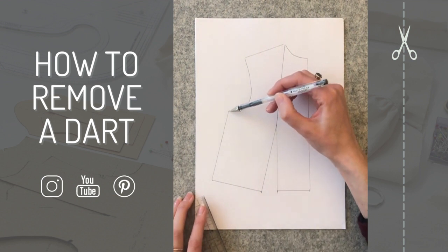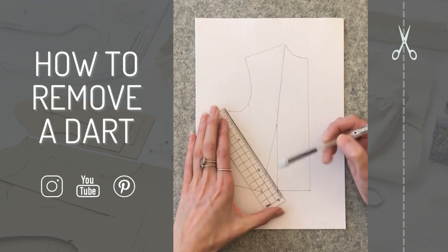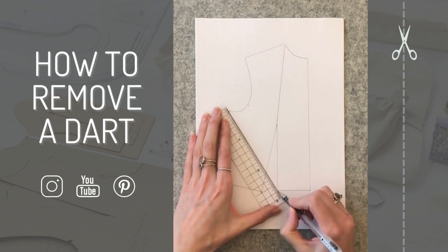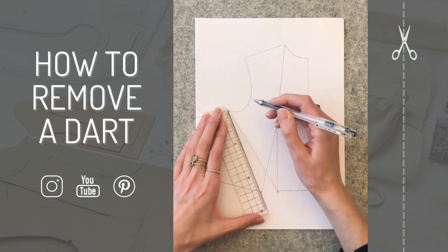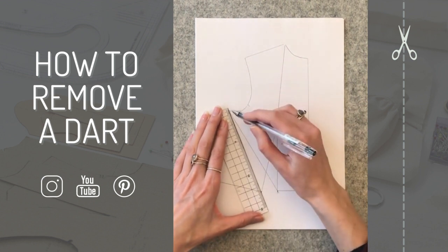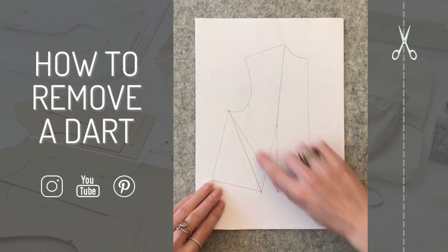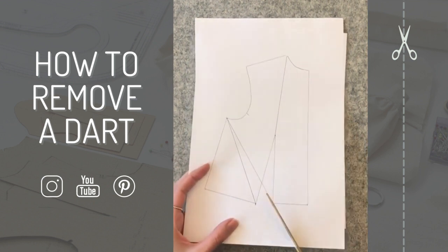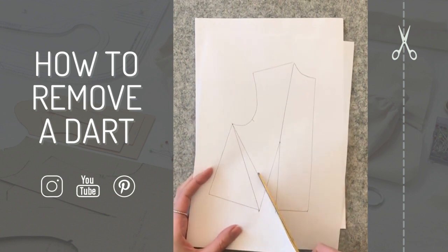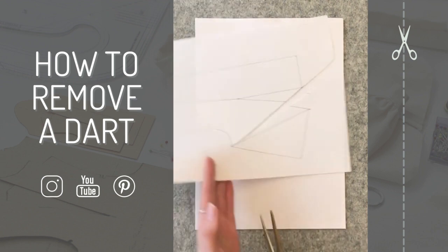What we're going to do is join from the bottom of the underarm here down to each side of the dart. Then we want to cut up one side - it doesn't matter which side - and we're going to be closing this gap up here. Just cut up one side that you've drawn, cutting from the edge but leaving it just attached so you can pivot.